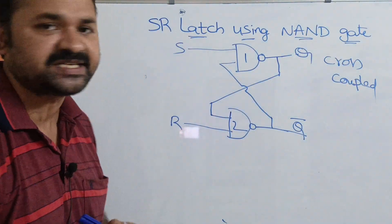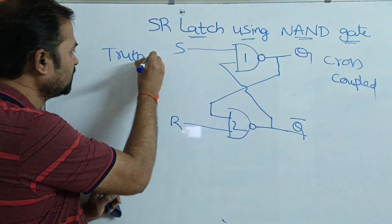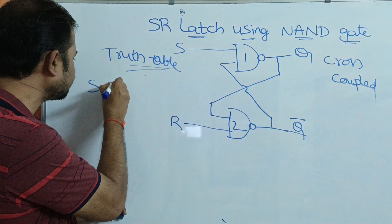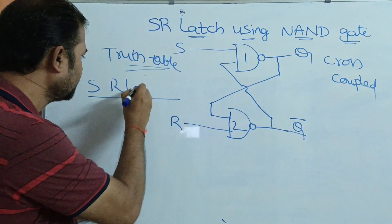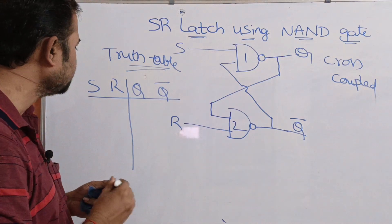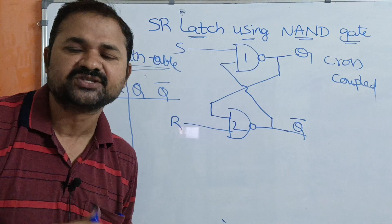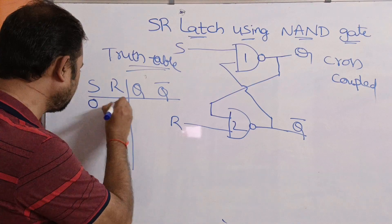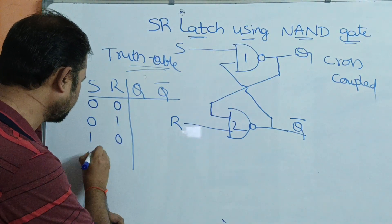Now let us discuss about the truth table. Here we have two inputs: S and R, and the outputs are Q and Q bar. With two inputs, we will have 2 power 2, that is four combinations: 00, 01, 10, and 11.